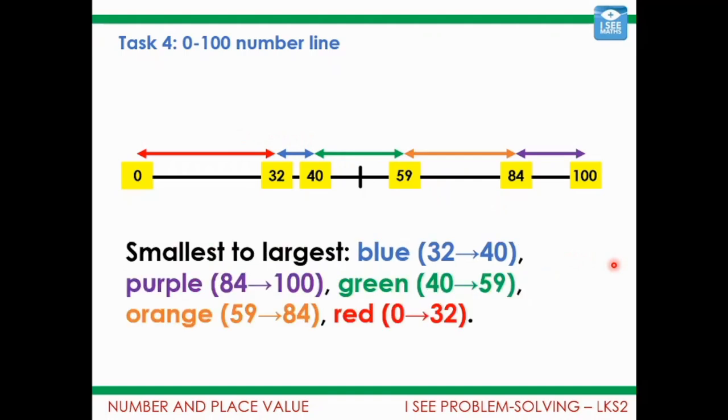Now if I'm ordering the gaps from smallest to largest then actually this would be the smallest gap, this gap of 8, then I'd have this purple gap this one of 16, then it would be the green gap, the orange gap would be slightly bigger if you remember that was a gap of 25, and then this is the one of 32.